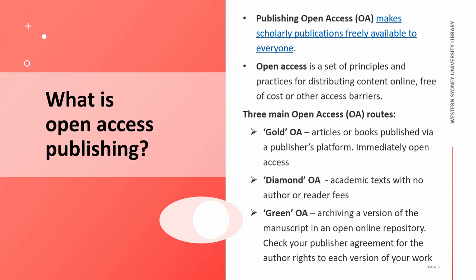Publishing open access means making scholarly publications freely available to everyone. It makes research readily accessible online at no cost and without access barriers. By adding an open license, such as a Creative Commons license, the outputs can also be legally shared and reused. There are three main types of open access route.